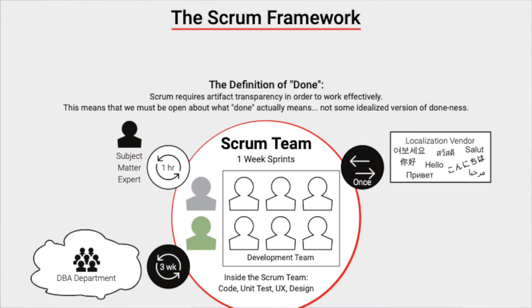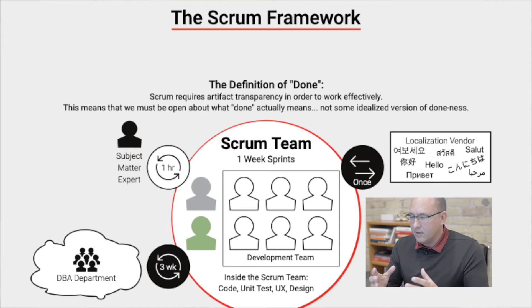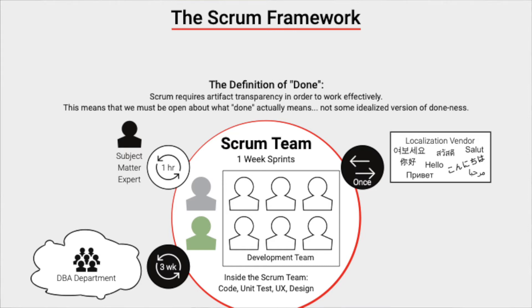Let's look at another problem situation. Often when doing software development in Canada, we have to localize into French for regulatory reasons, and international products may need many languages — this is called localization. Most organizations outsource that to a localization vendor. A Scrum team might not be able to do that every sprint; instead, they might do it in a big batch — sending all the localization content to the vendor at once and getting it returned once. This is clearly a problem because the team won't have potentially releasable increments without that localization work.